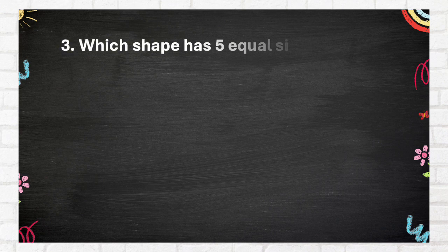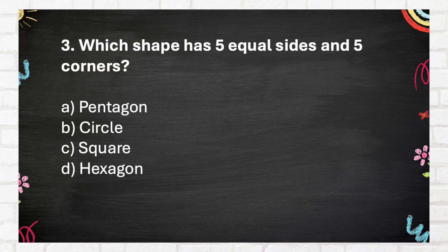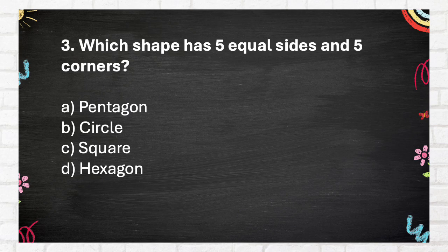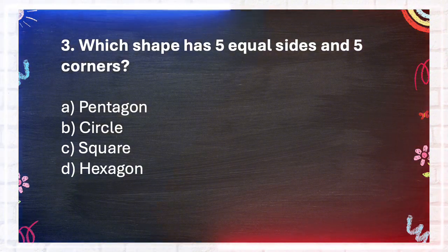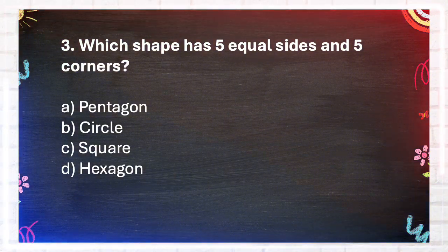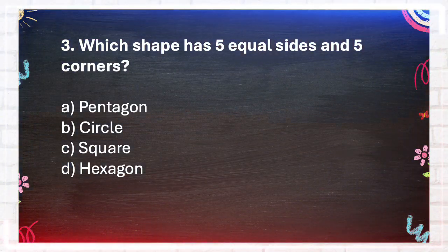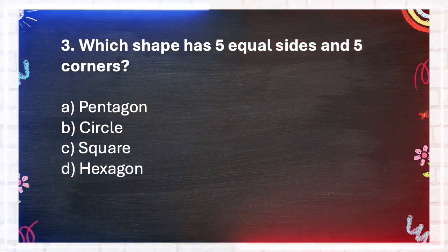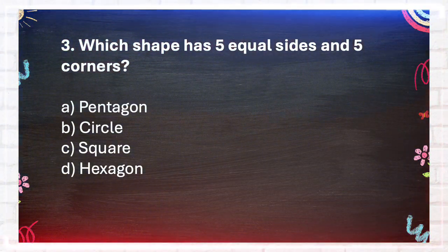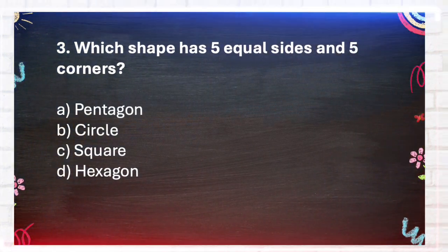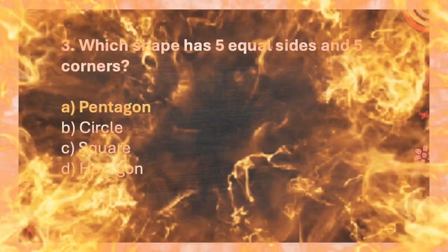Question number 3. Which shape has 5 equal sides and 5 corners? A Pentagon, B Circle, C Square, D Hexagon. The answer is A, Pentagon.